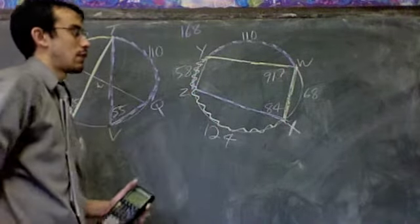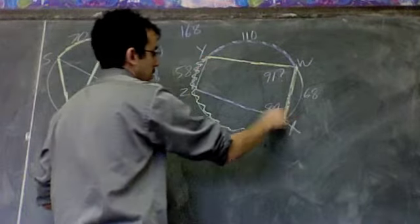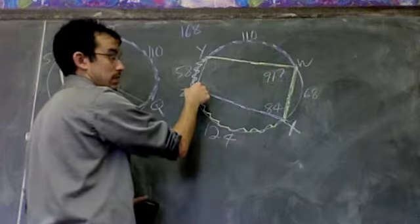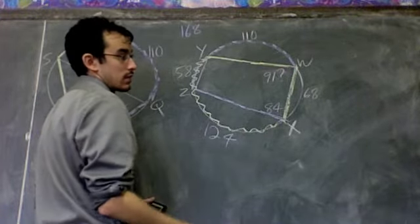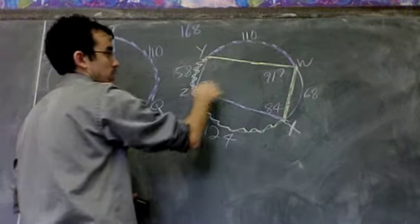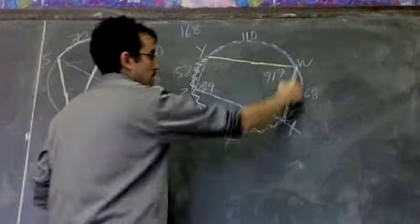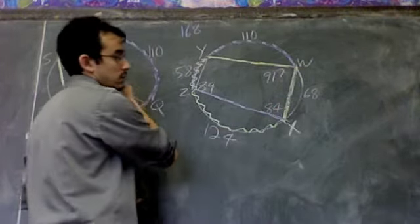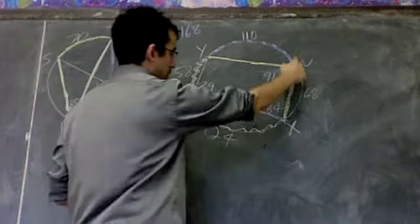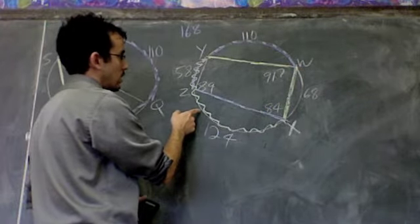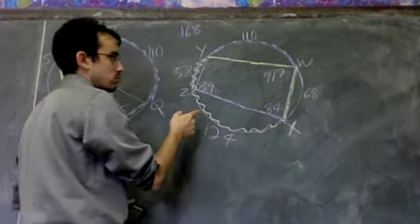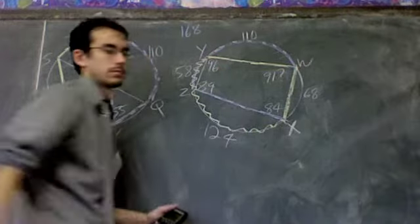You could get these as well. How you would get them? Same idea. This inscribed angle here, YZX, hits at Y and X. So if I add these up and divide by 2, I'll get this. 110 plus 68 is 178. 178 divided by 2 is 89. This inscribed angle, the vertex is Y. The endpoints are Z and W. So I know this is my arc. So if I add 124 plus 68, I'm going to get 192. If you divide that by 2, you're going to get 96. That's better.